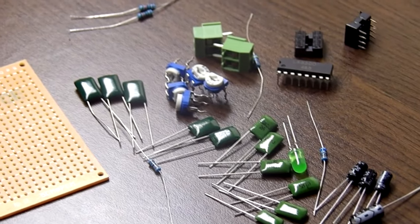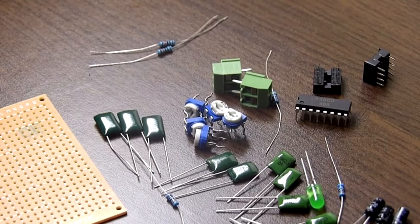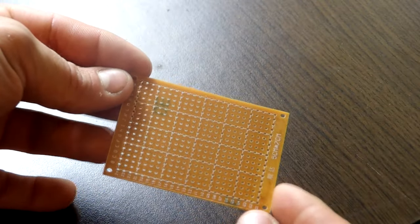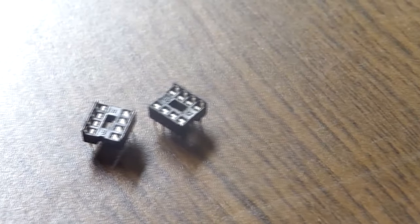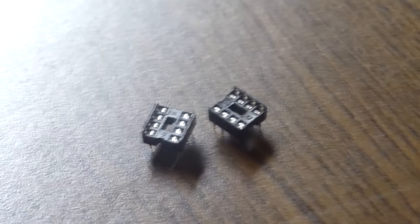Let's start building by gathering all the required components. I'll be mounting everything on a prototype board, often called a Vero board. First, let's add the LA3600 IC to the Vero board, unsoldered.